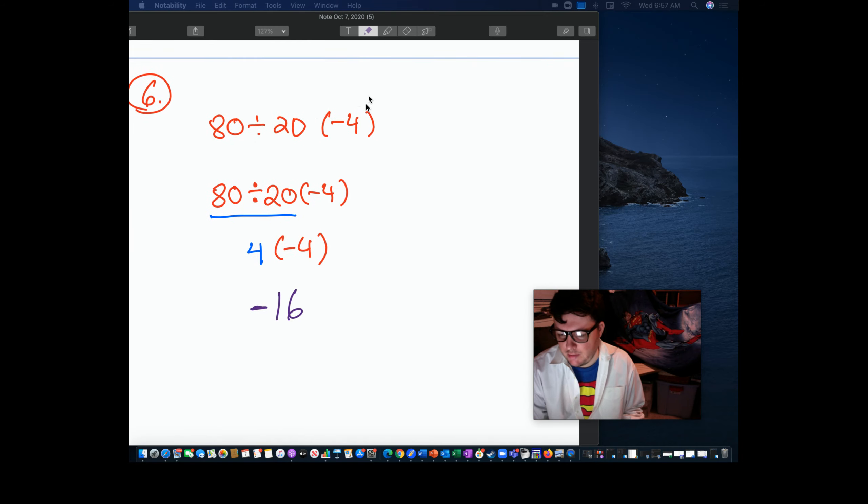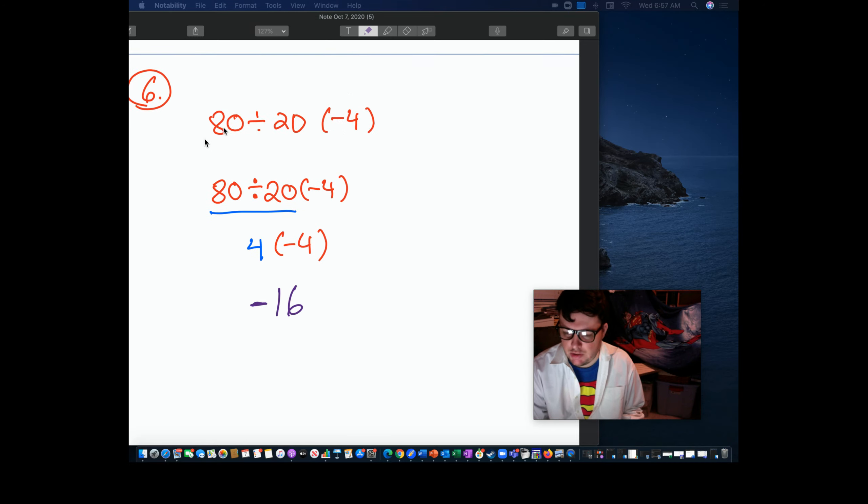Last one, PEMDAS. So do we notice here that we don't really have parentheses? I know we have parentheses here, but that doesn't really matter. Exponents, everything's 1. So we have multiplication, division. We know in deciding we go left to right. 80 divided by 20, 4. 4 times negative 4, negative 16. There we have it. Clark Kent out.